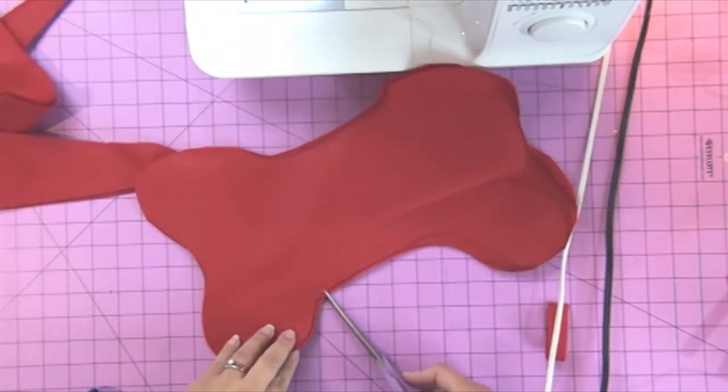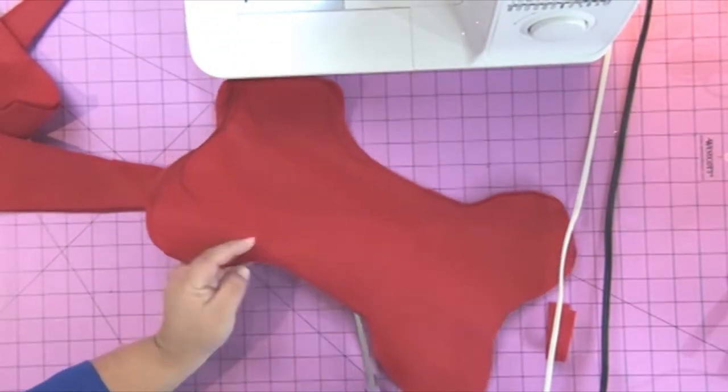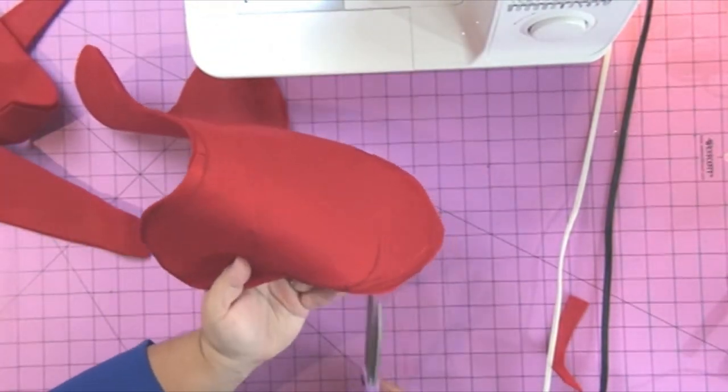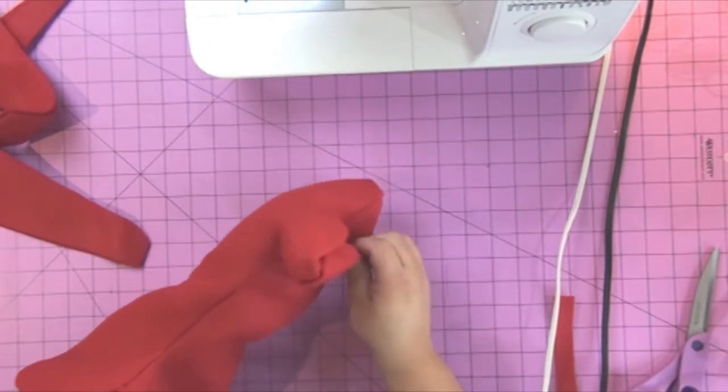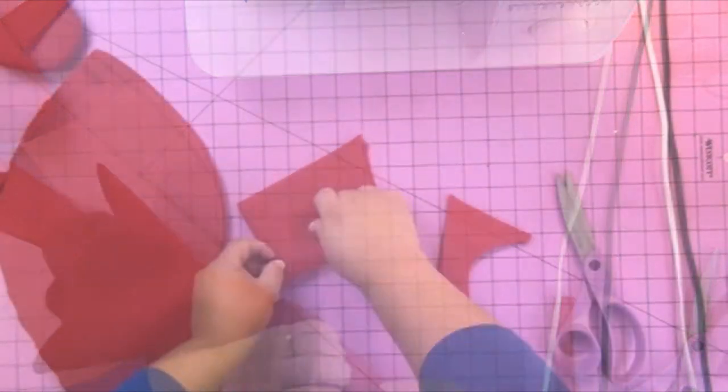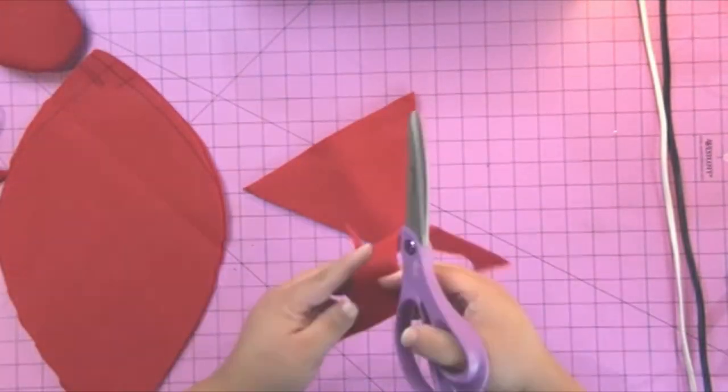Then I cut a little strip, about one inch by six inches, to use to make the hanger. I snipped my curves to the stitch line so it would be easier when I turn this inside out to get around all those curved areas.